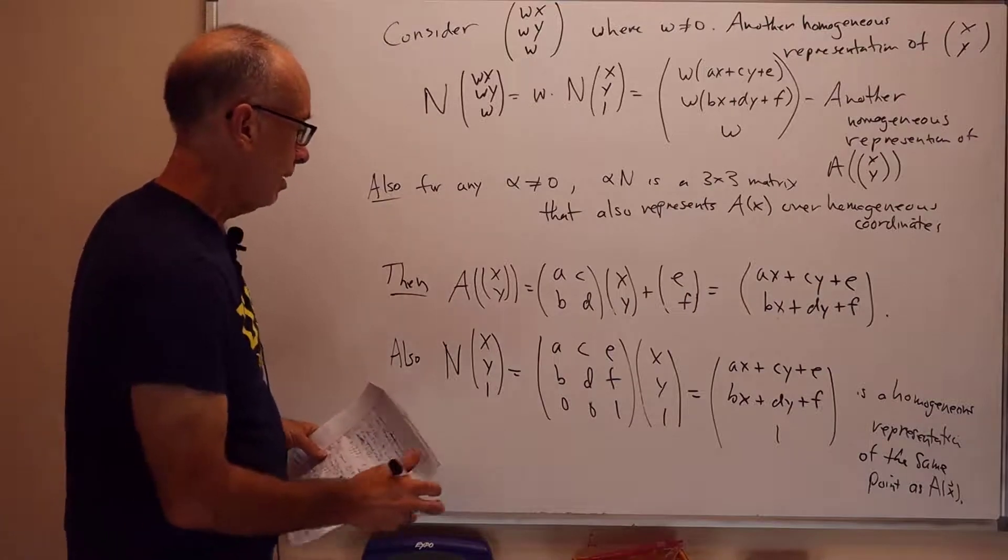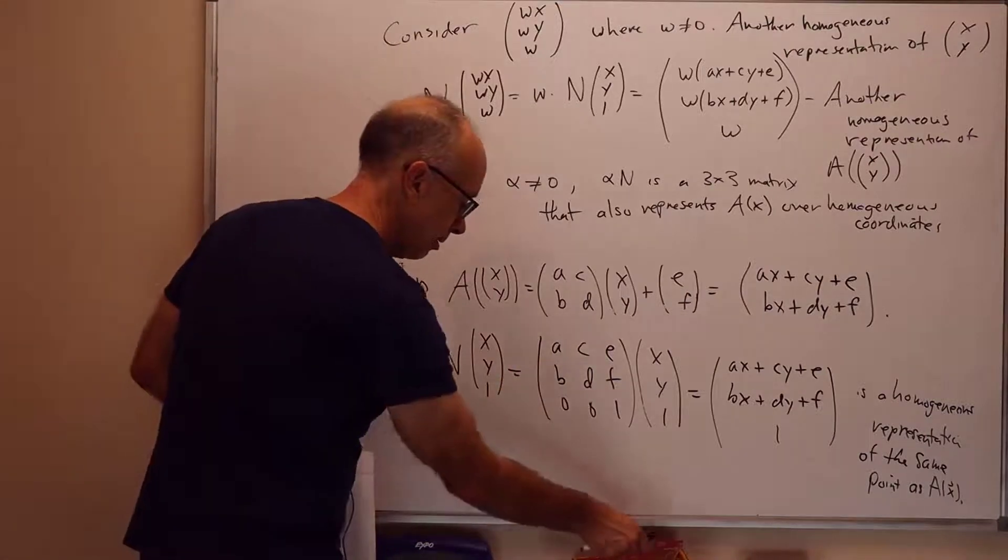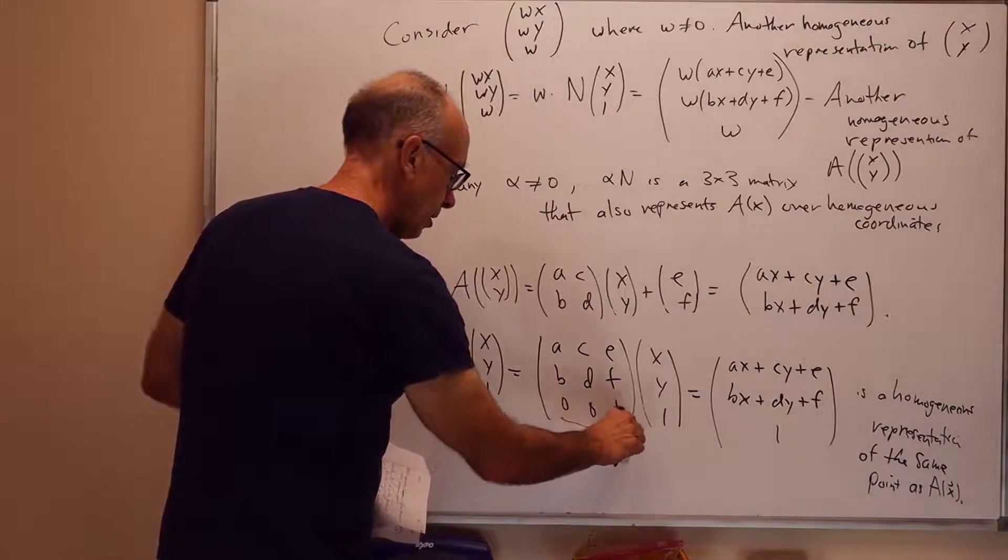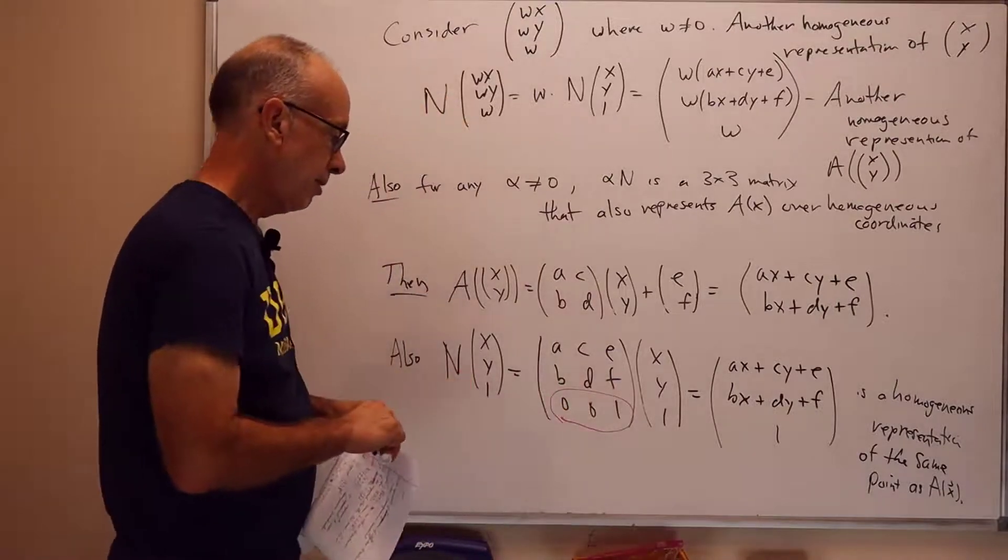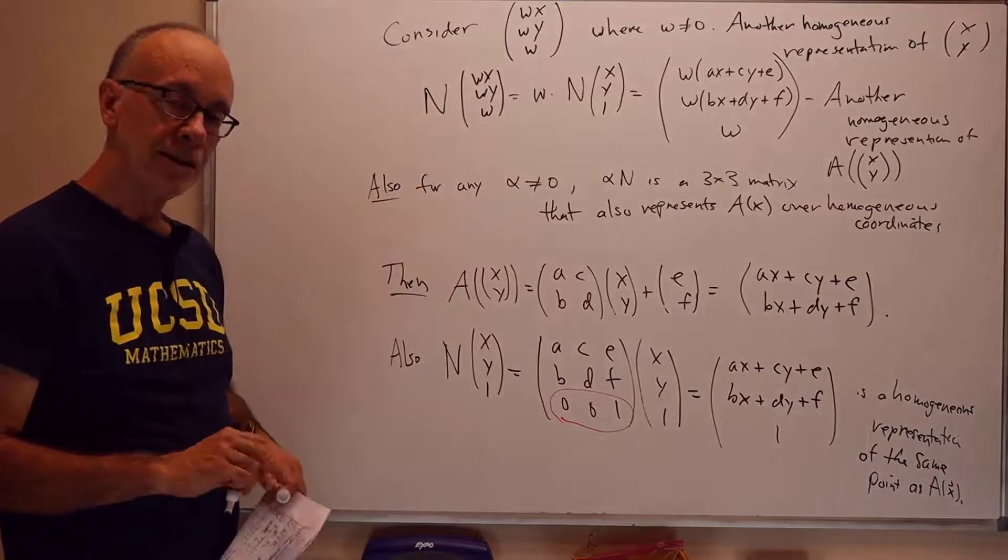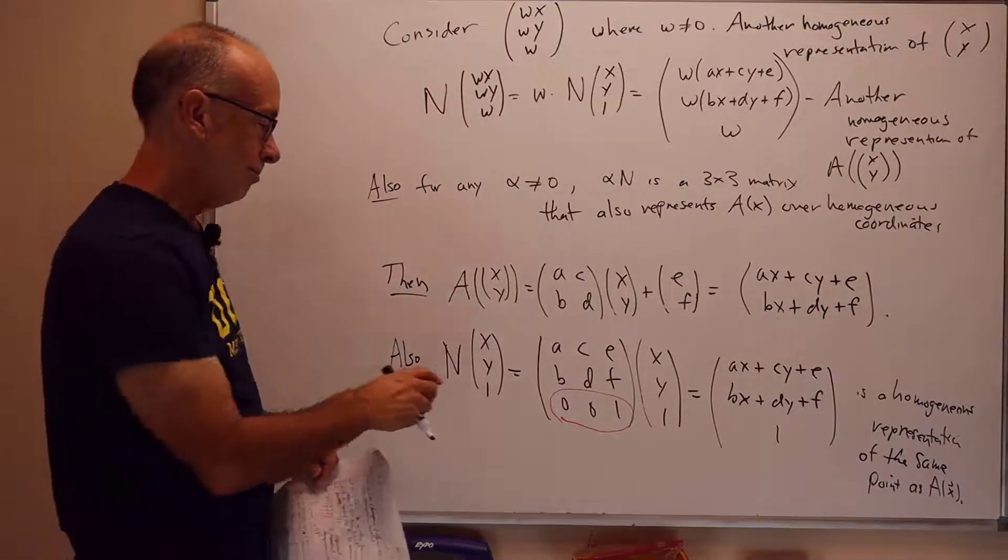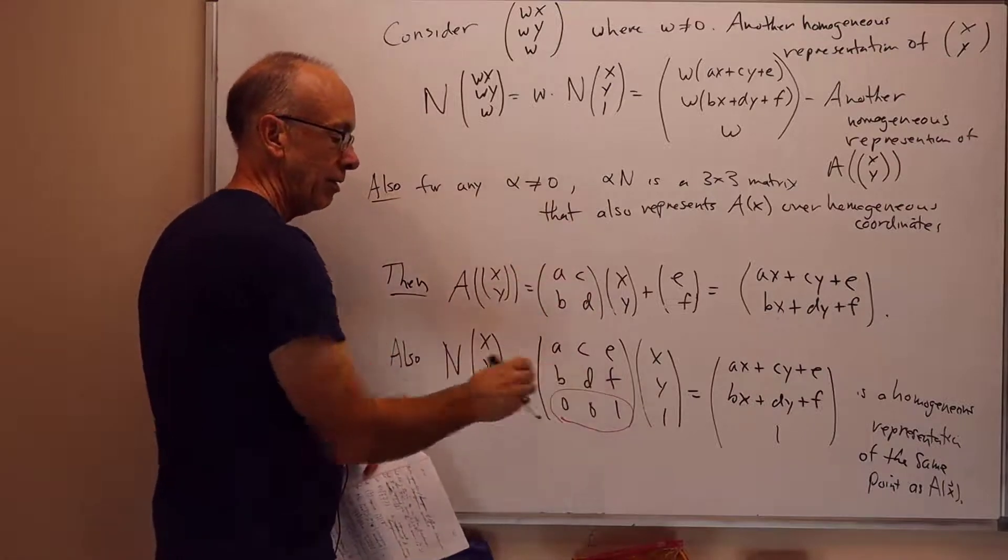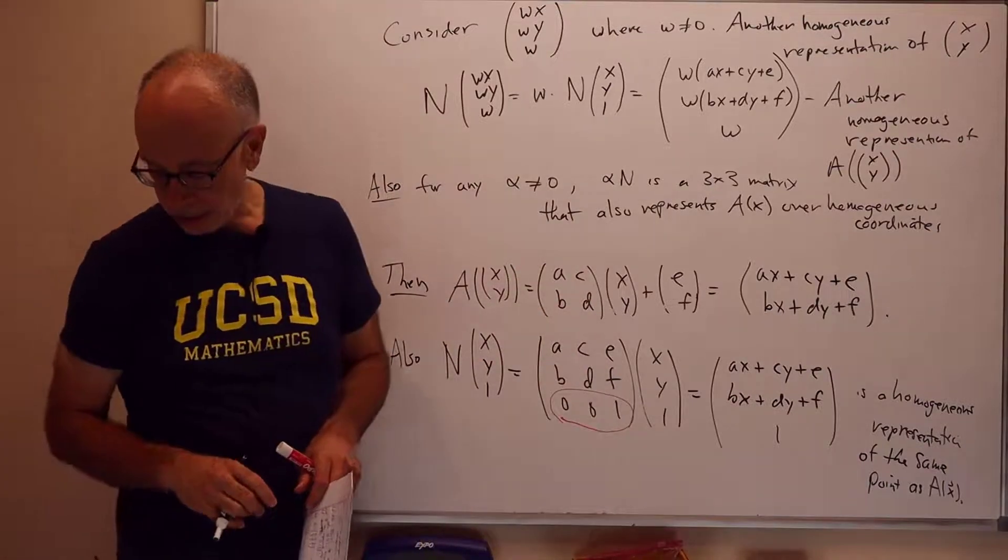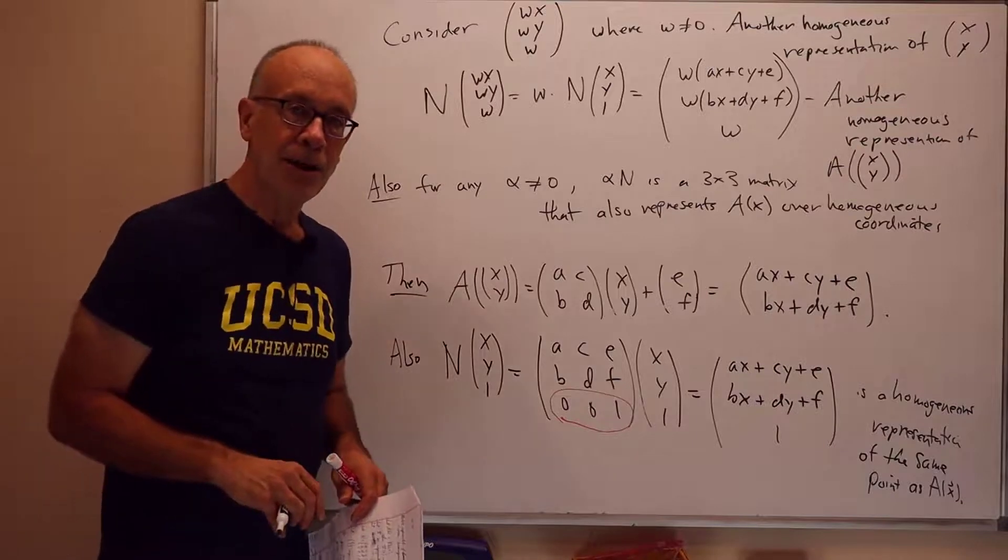The last final comment here for the moment. I'll use a different color here. We're always using 0, 0, 1 as the bottom row of these 3 by 3 matrices. So there's not much, unless we multiply by an alpha, in which case we use 0, 0, alpha. So there's not much useful information in the bottom row.